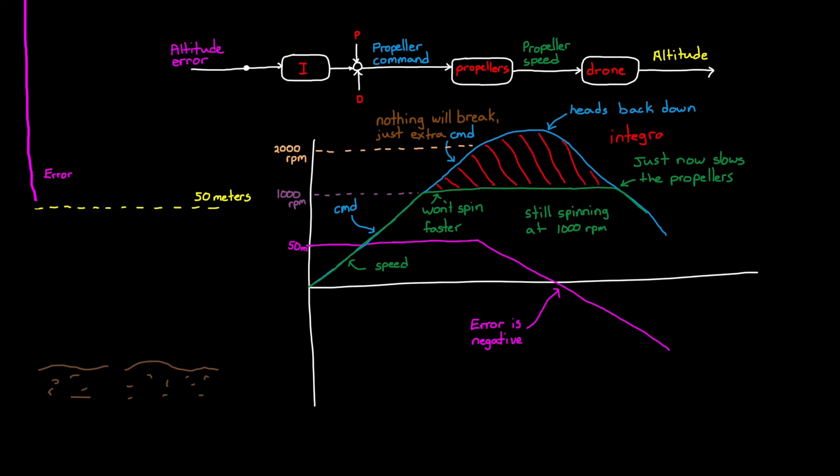This is called integral windup, and it's something we need to protect against in our PID controller, because you never know if you're going to get into a situation where an actuator saturates. And when something does saturate, we want to minimize the time it takes to reverse the command when the error changes signs. So we need to implement some kind of anti-windup method.